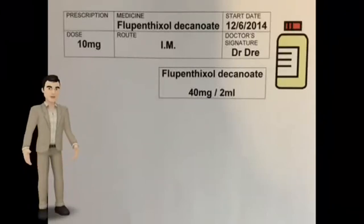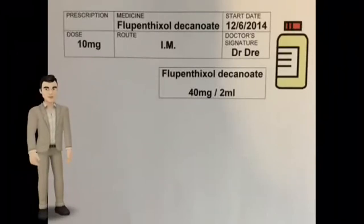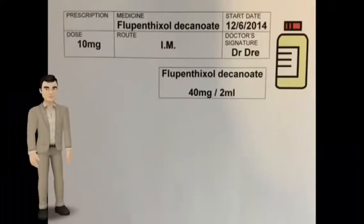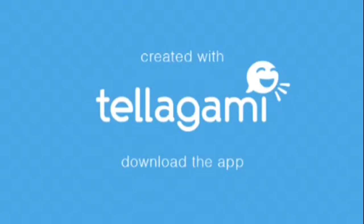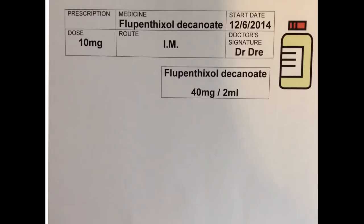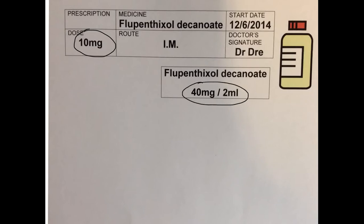Your patient has been ordered 10mg of flupenthixol decanoate by intramuscular injection. 40mg in 2ml of liquid for IM injection is available. What do you give your patient? So how do we calculate what volume to give our patient?